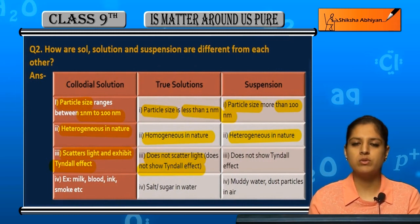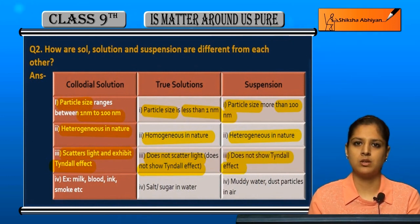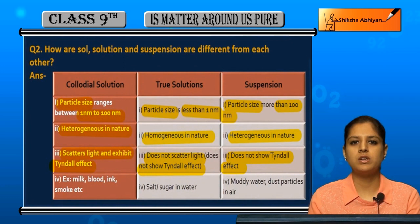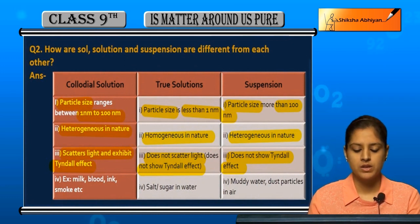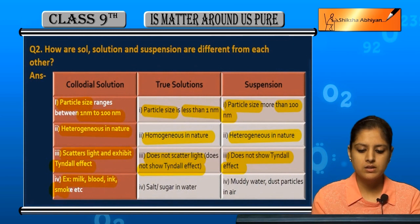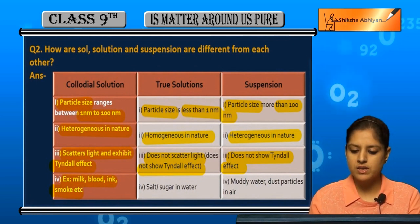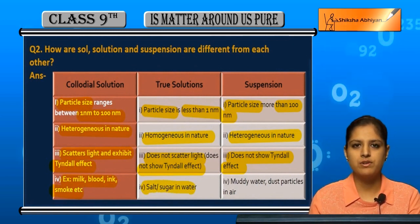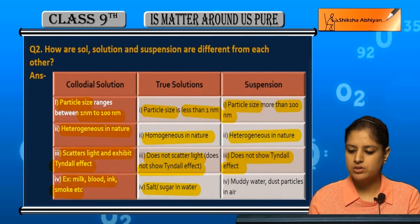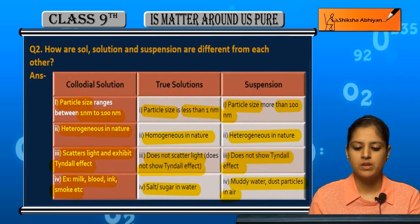Suspensions also do not show the Tyndall effect because their particle size is comparatively large. So colloids are appropriate for the Tyndall effect. Examples of colloids are milk, blood, ink, smoke, etc.